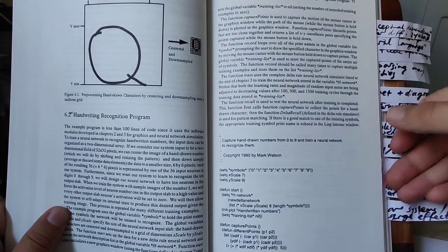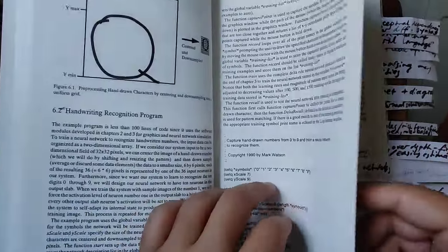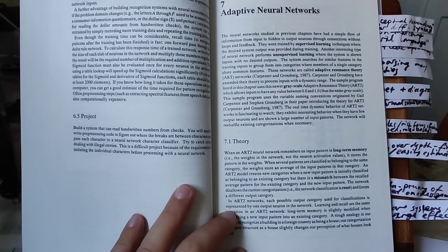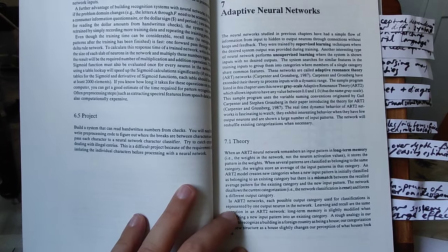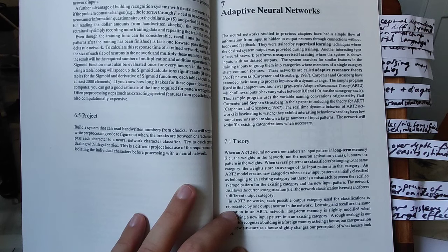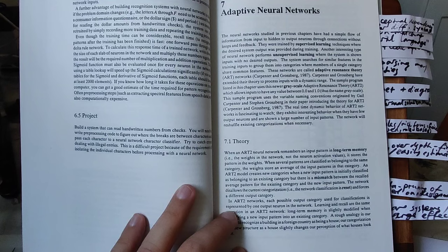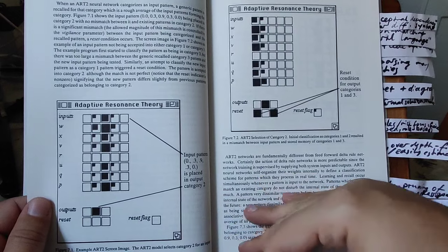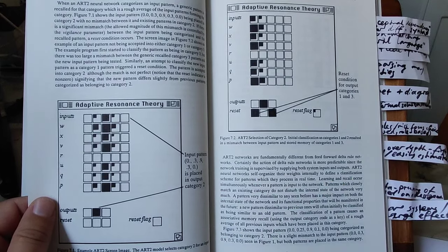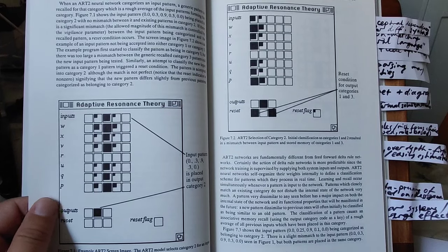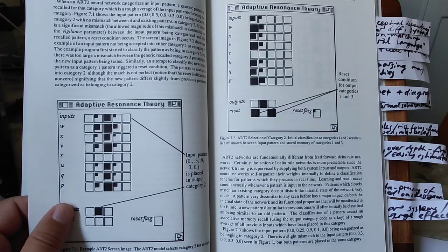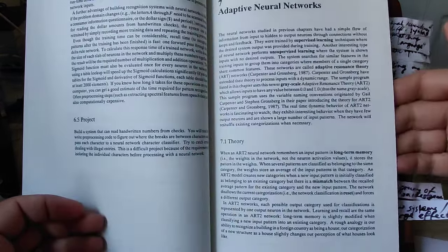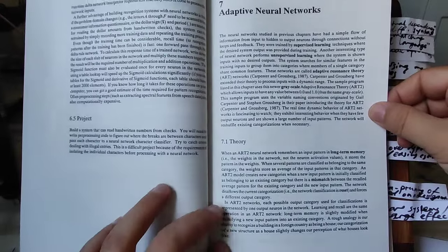Here how to capture hand-drawn numbers zero to nine and train a neural network to recognize them. As I say, this book is exceedingly practice oriented. Having looked at these more basic patterns, Mark advances to more interesting topics such as adaptive resonance theory networks.